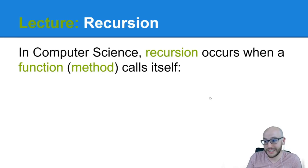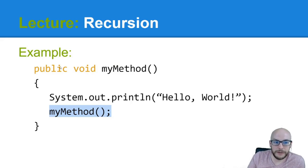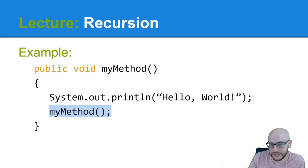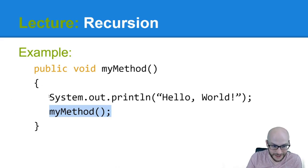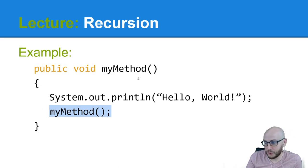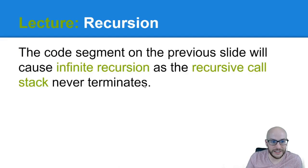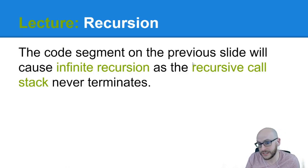In computer science, recursion is when a method calls itself — that's it. Here's an example method: the first thing it does is print 'Hello World,' and then it calls itself again. So after printing Hello World, we execute the method again, print Hello World, call the method — which you should quickly recognize causes infinite recursion. The recursive call stack just never terminates.